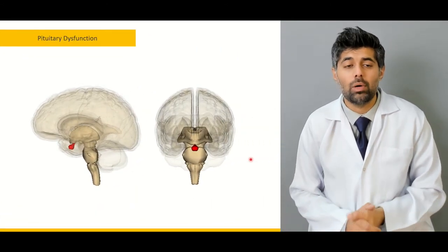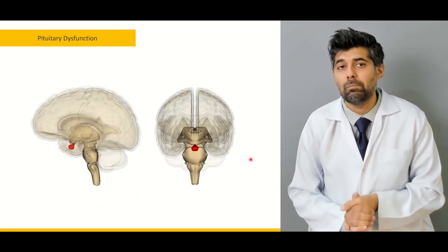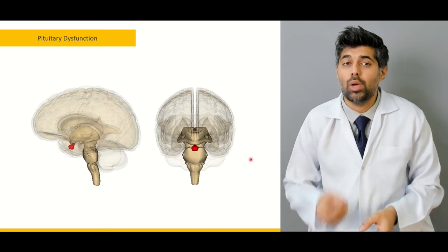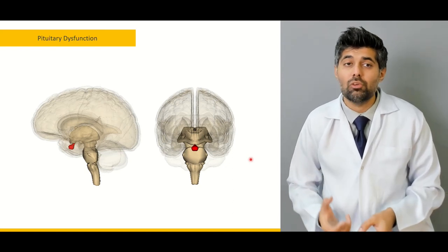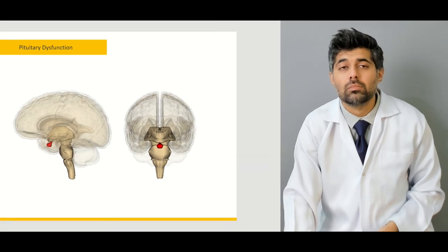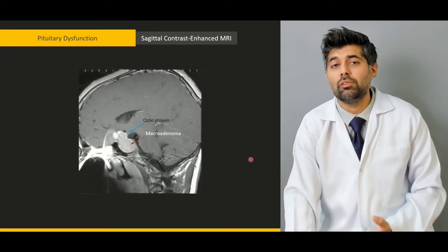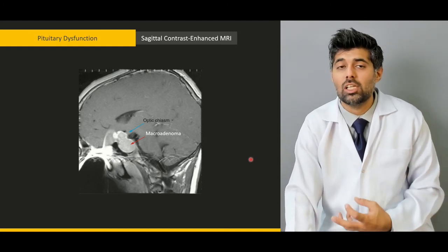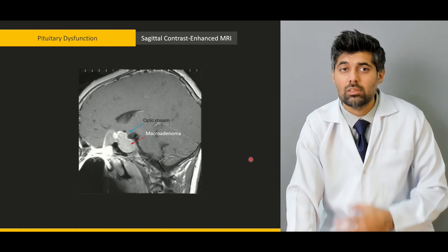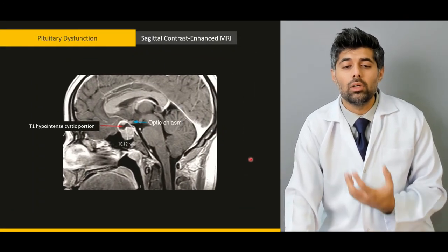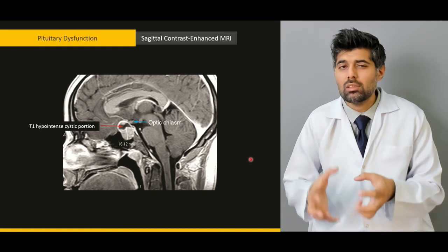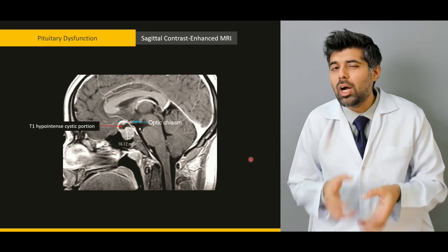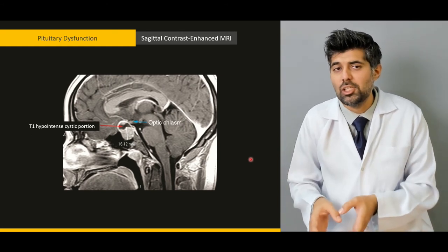Then we'll learn about the pituitary gland — its anatomy, why its anatomy is very important, and what its relation to the optic nerve is. We'll learn about the classification of the pituitary adenoma and how this classification affects our treatment plan. Then we'll learn about the peculiar quality of pituitary adenoma and why it is called a hypo-intense lesion.